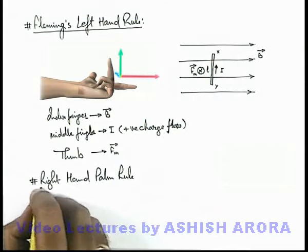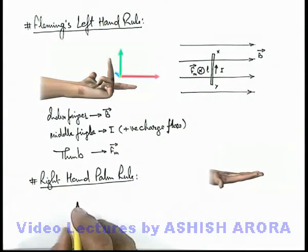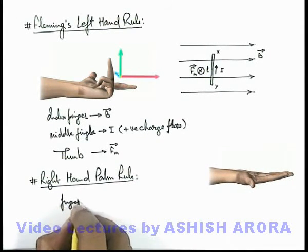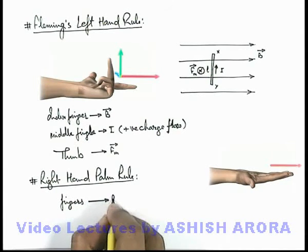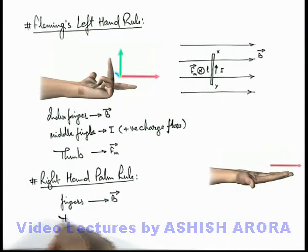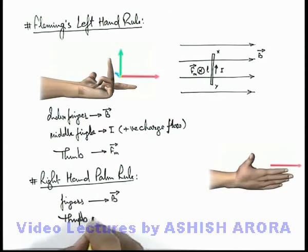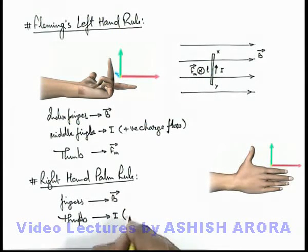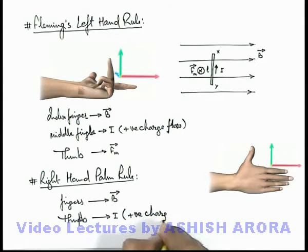we spread our right hand palm in such a way that if our fingers are pointing in the direction of B vector, and we keep our thumb in the direction of current, or the positive charge flow direction.